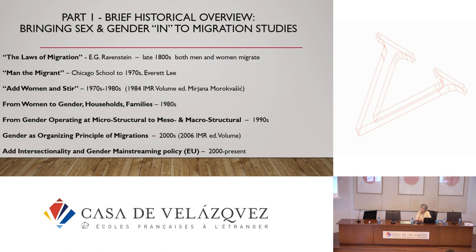In the 1980s, there's a move from saying, let's predominantly fill in the gap left by 'man the migrant' with 'woman the migrant too,' toward looking more at gender relations and particularly household decision-making. How do males and females decide who's going to migrate? And how do you take care of all the household needs during migration when one or more members are absent?